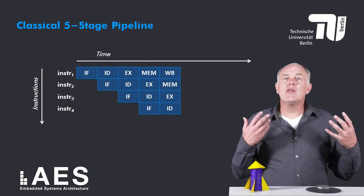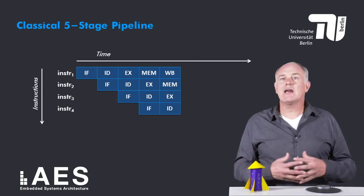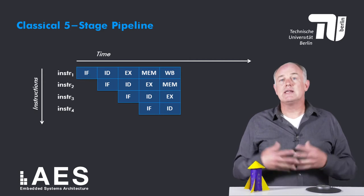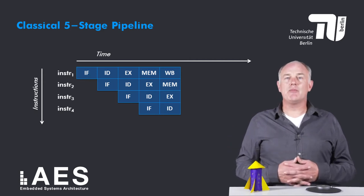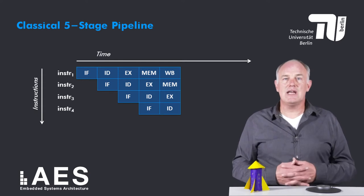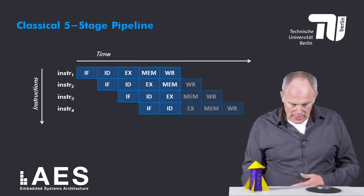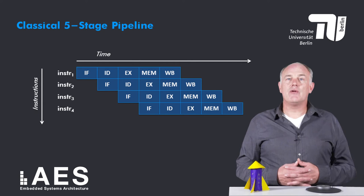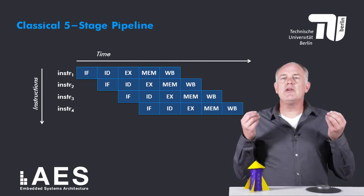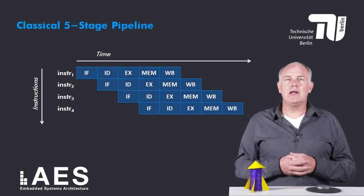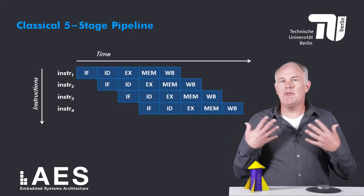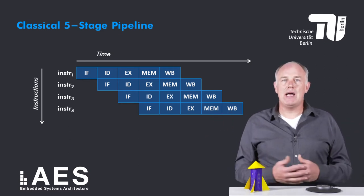In the fifth clock cycle the first instruction completes by writing back its result. The second instruction accesses memory if applicable, the third instruction is executed, and the fourth instruction is decoded. And so on and so forth. We see that in the ideal case every clock cycle one instruction completes.